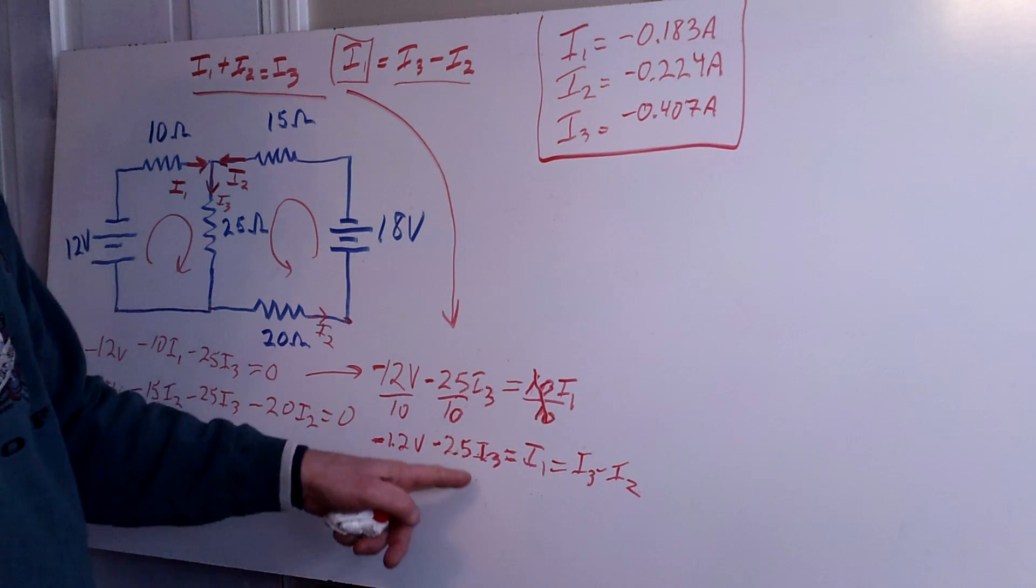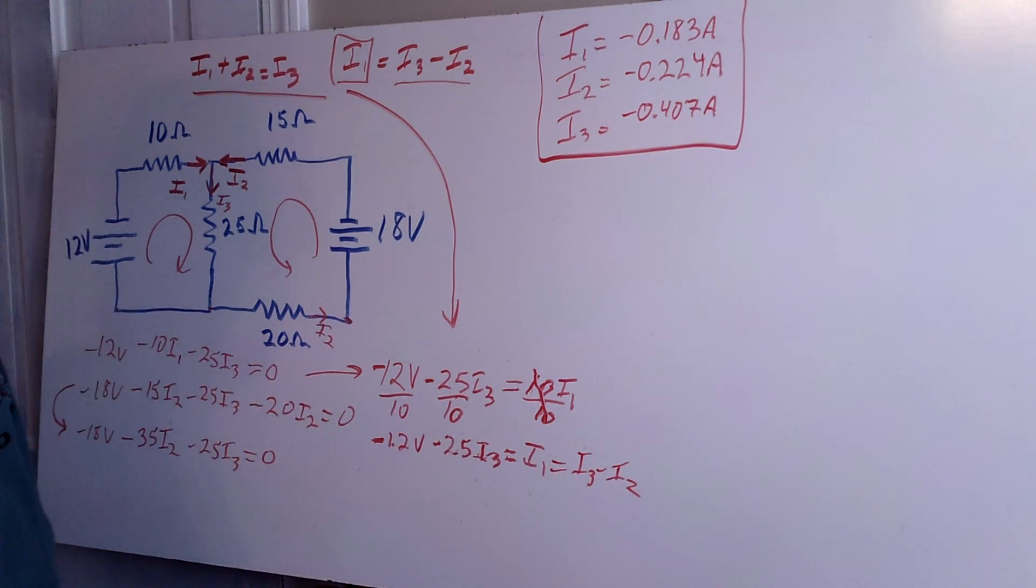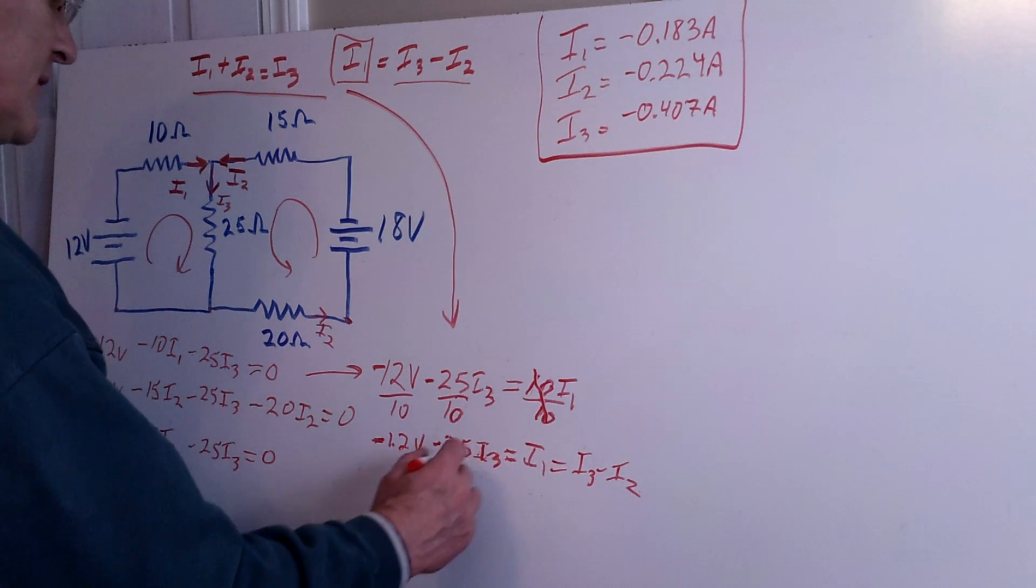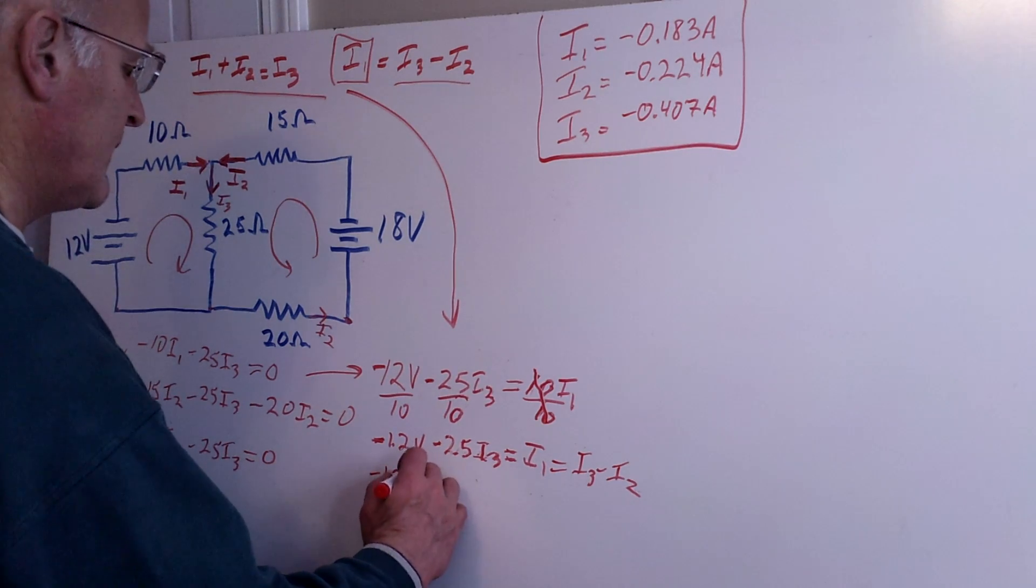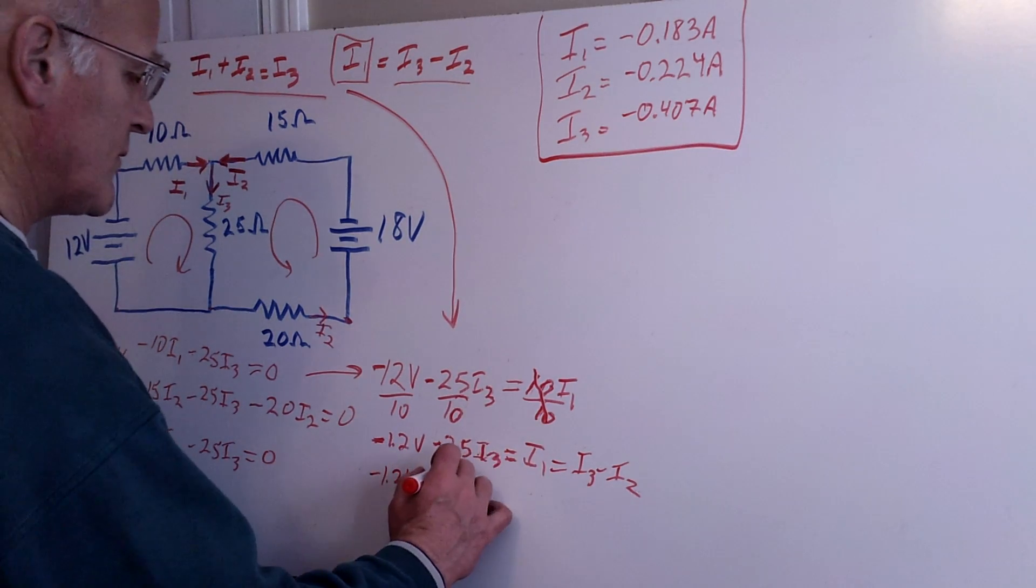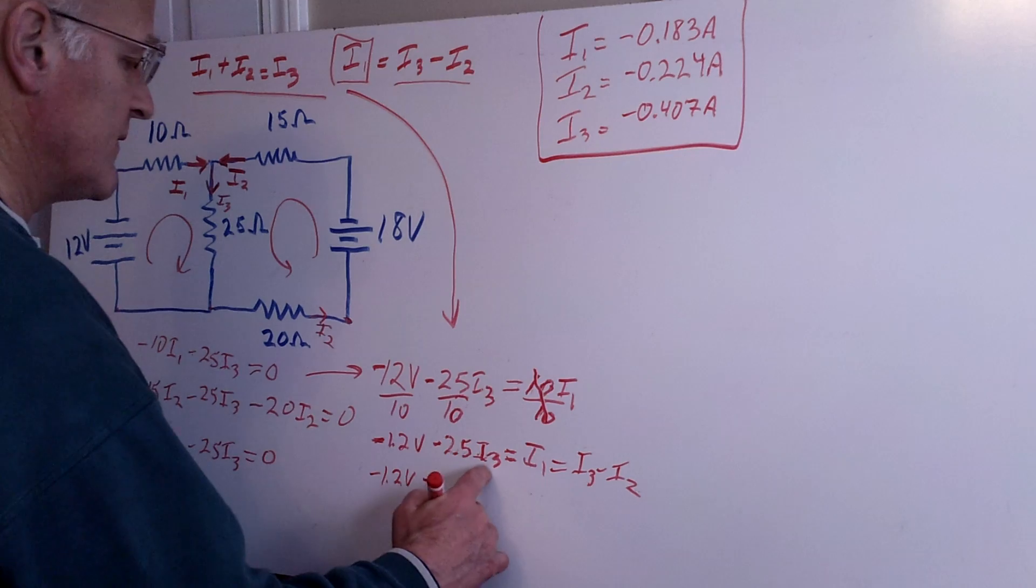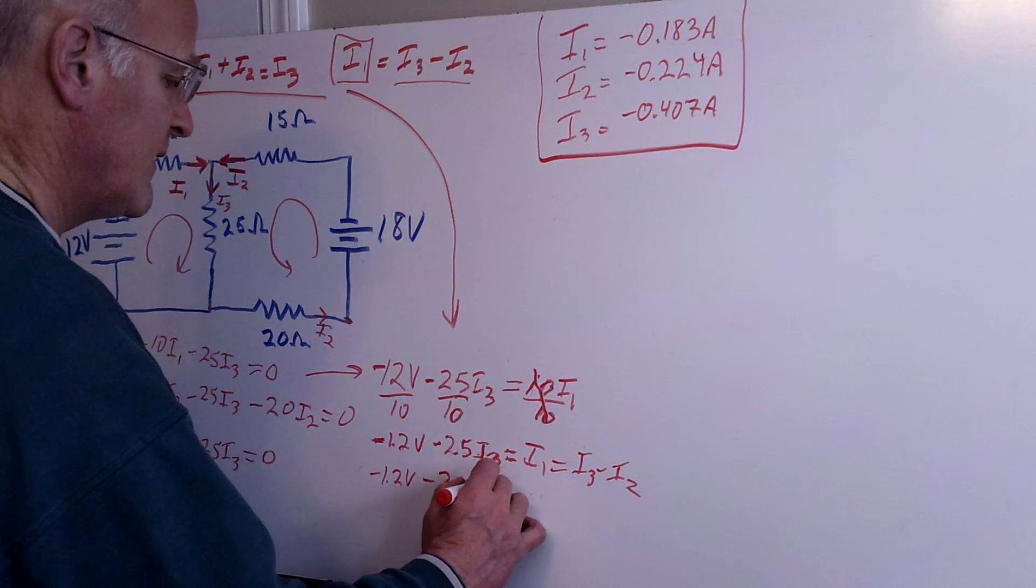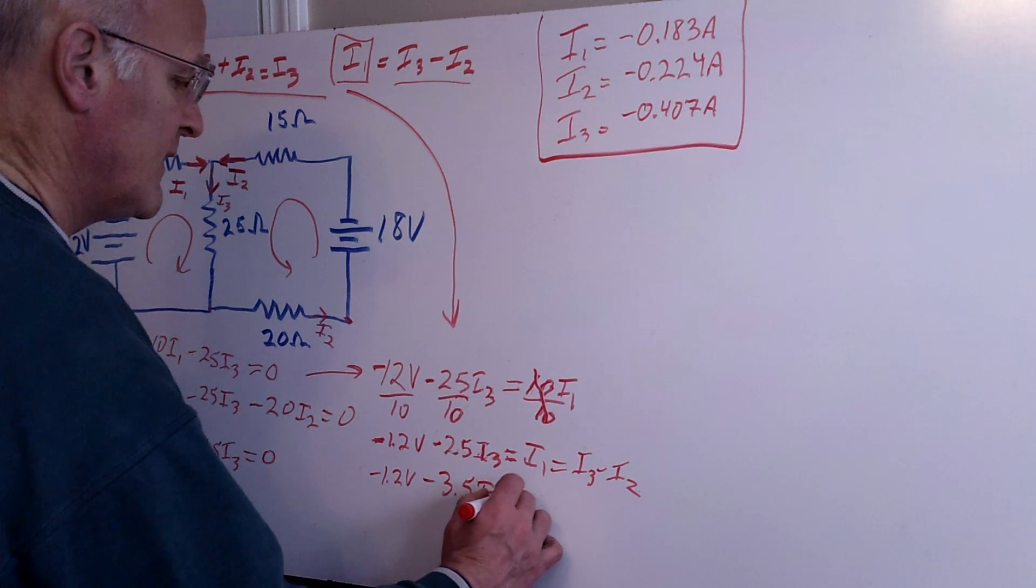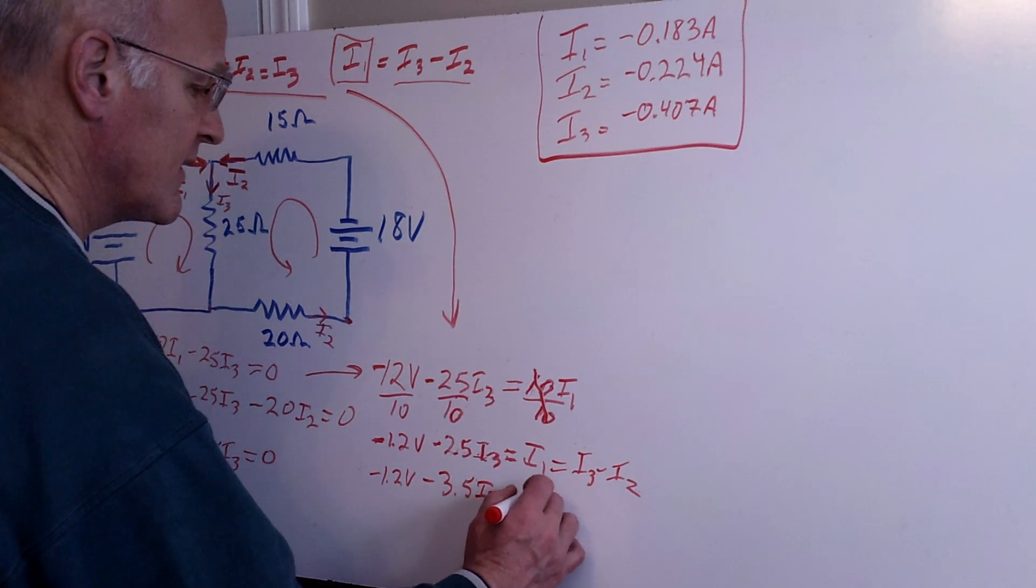And now I have to solve for one or the other. And since I've got two I3s and only one I2, I think I'll just solve for I2 initially. So I bring the I3 over to this side, and I get a negative 1.2 volts minus an additional one of the I3. So that's minus 3.5 times I3. And that's equal to negative I2.